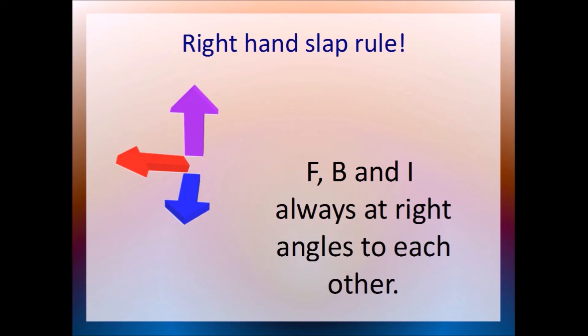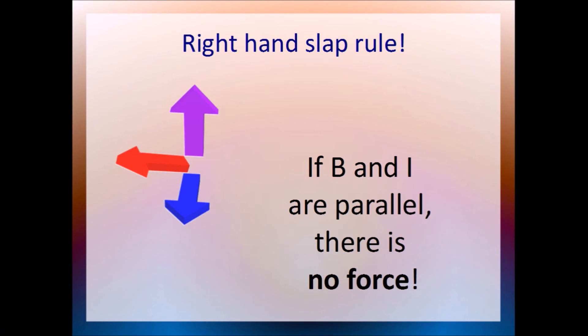Notice that F, B, and I are all at right angles to each other. If B and I are parallel, if the current flows parallel to the magnetic field lines, then you get no force at all. This is a very important thing to keep in mind.